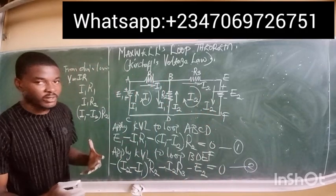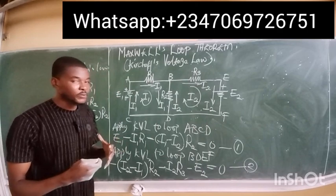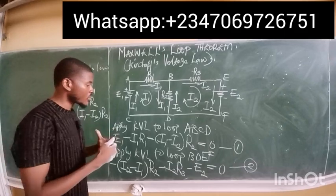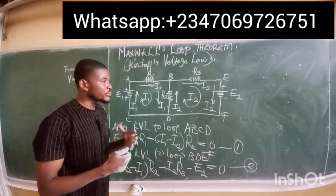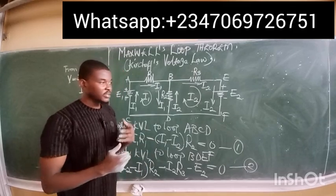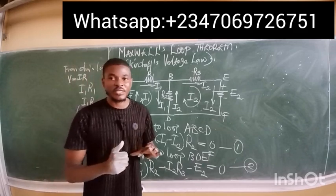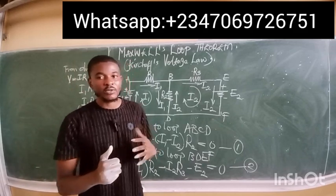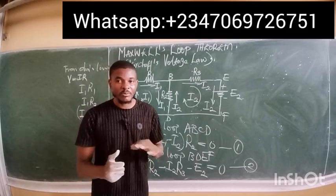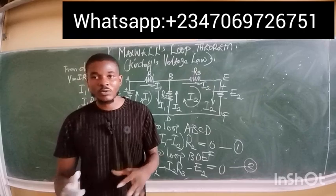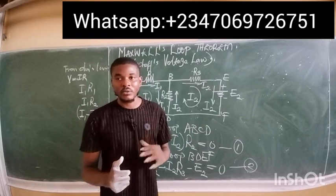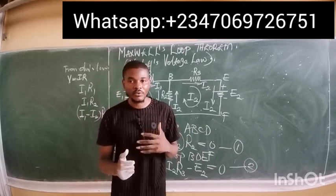That is all that Maxwell's loop theorem is about — how you apply Kirchhoff's voltage law to find the values of either resistors or currents in a circuit. In the next video we will start applying what we've learned here to solve problems. I hope you found this video interesting and helpful. Please share your thoughts in the comment section, and if you have any questions feel free to ask. I'll see you in the next video. Stay safe and cheers.